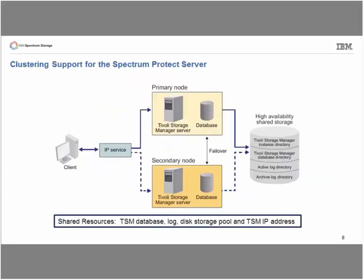Turning from the client to the server, it's very similar. In this case, what we're sharing are the resources the Spectrum Protect server owns: the Spectrum Protect database, the instance directory, active log, archive log — all the things that make a Spectrum Protect server work properly. If we have a failover, all those resources are transferred from the primary node to the secondary node. On Unix/Linux this is managed with stop/start scripts; on Windows we use defined resource groups to fail things over.